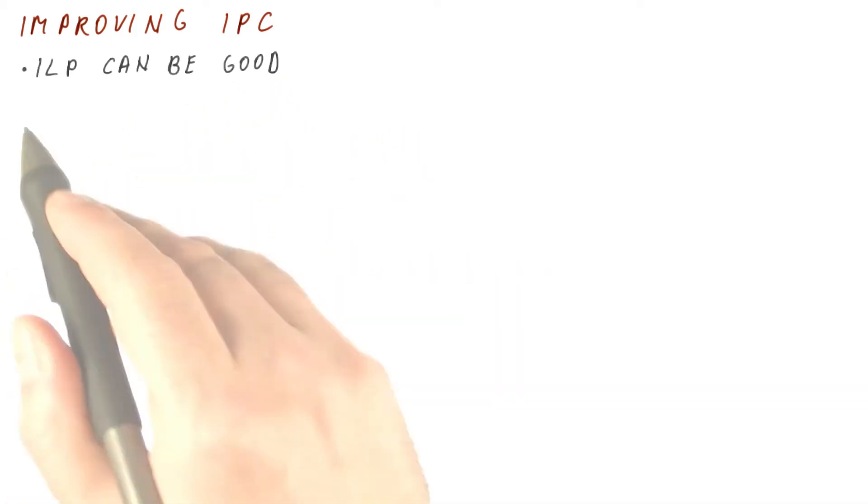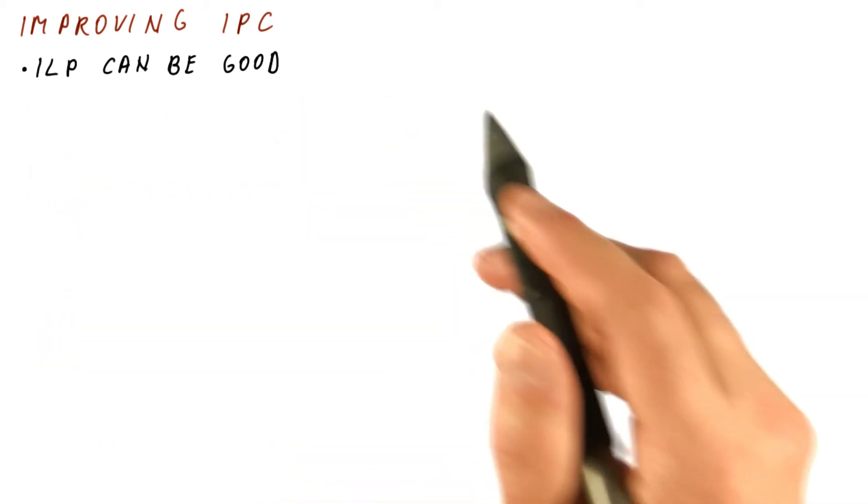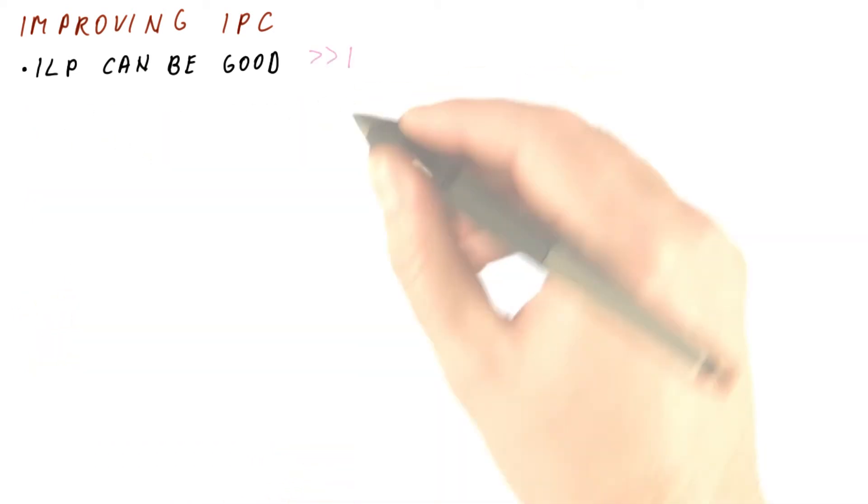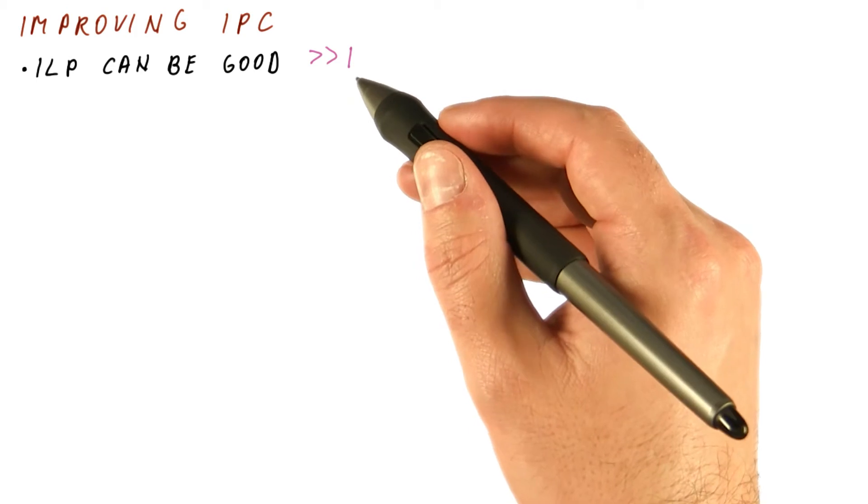For improving the IPC, we have seen that the ILP can be good. It can be significantly larger than one. Usually it's way over four.